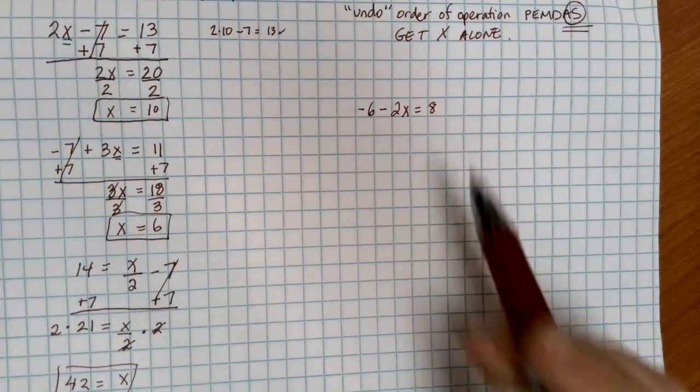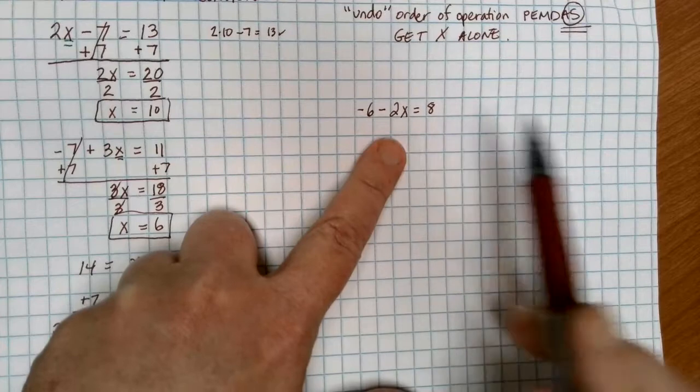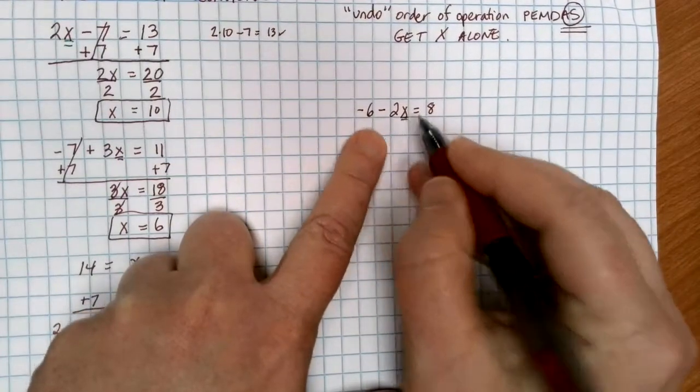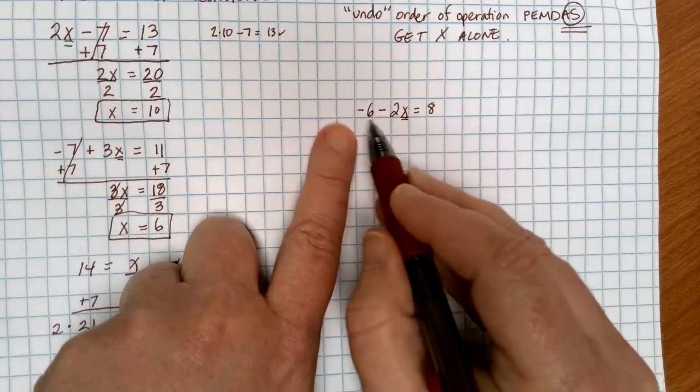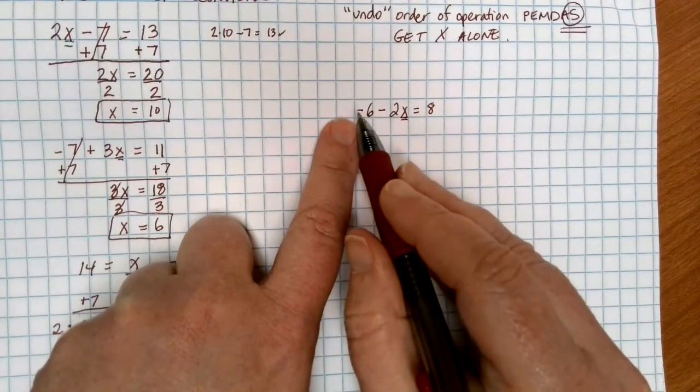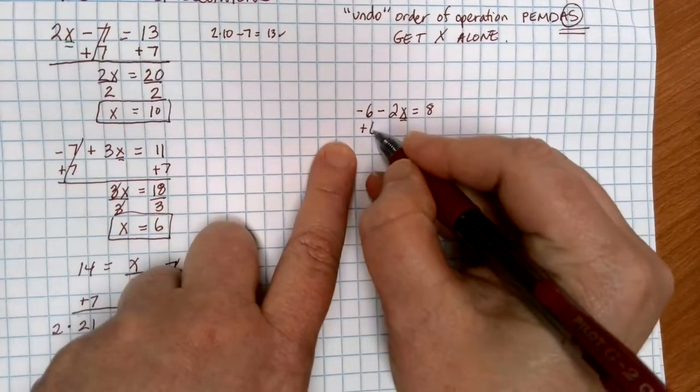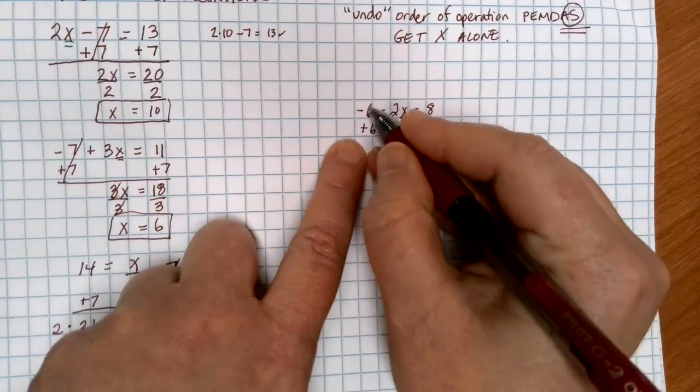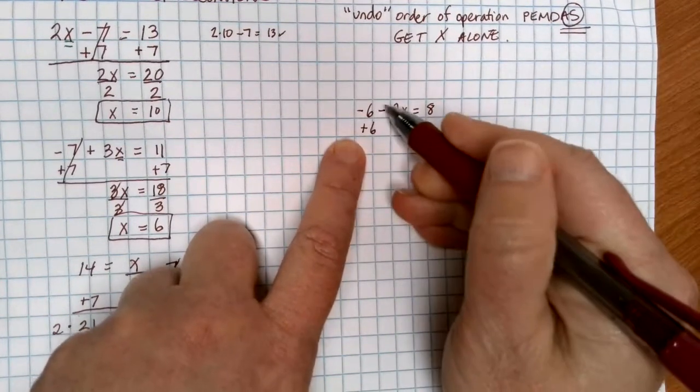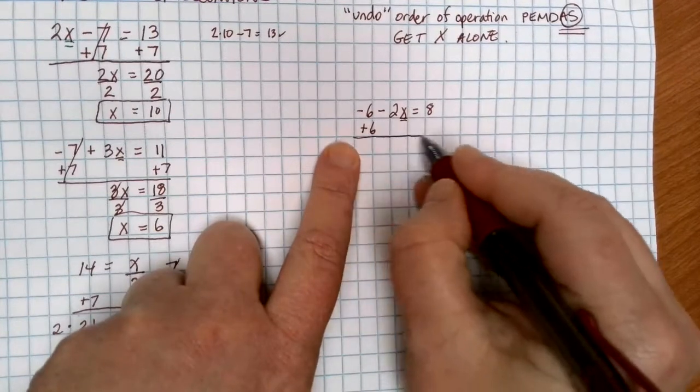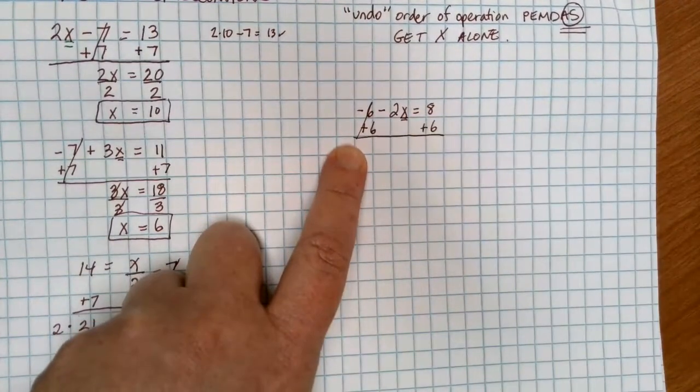In this case, I have a negative 6 out here, and then I'm subtracting 2x to equal 8. I want to get the x alone. The first thing that I want to get rid of is any numbers being added or subtracted. So in this case, notice I've got this negative 6 out here. If I want it to go away, I'm going to need to have to add 6. Again, our purpose is to get this to become irrelevant in my equation. Negative 6 plus 6 is 0, so that drops out. And if I add 6 on the left, I also have to add 6 on the right.